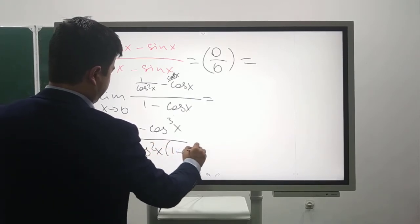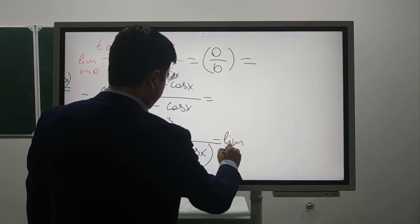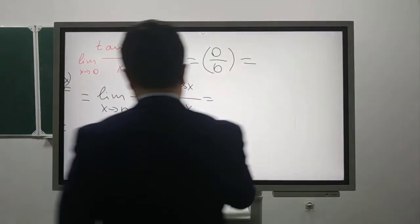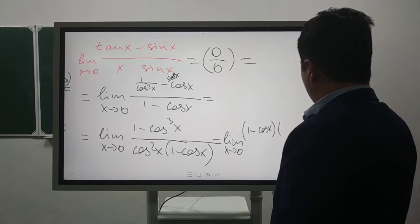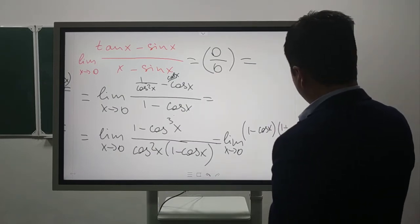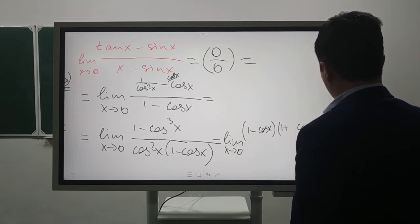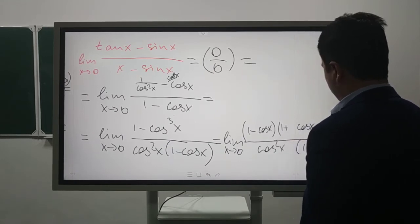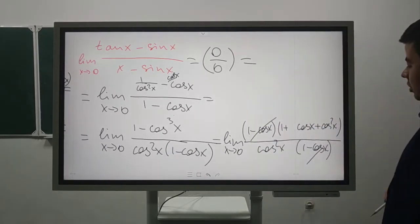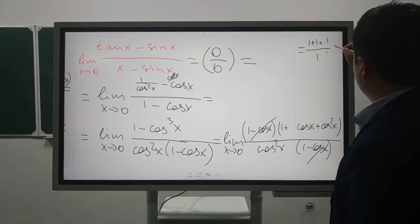When we open 1 - cos(x) using the formula: (1 - cos(x))(1 + cos(x)) = sin²(x). The 1 - cos(x) terms cancel. Putting 0, we have the answer: 1 + 1 + 1 = 3. So this is our answer.